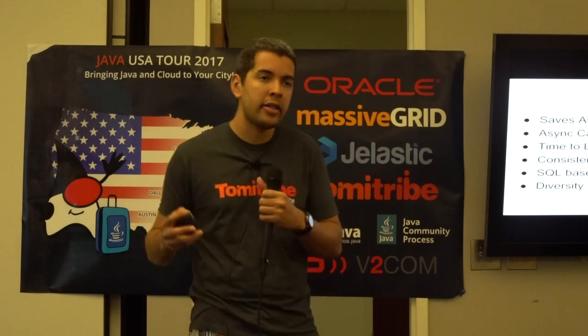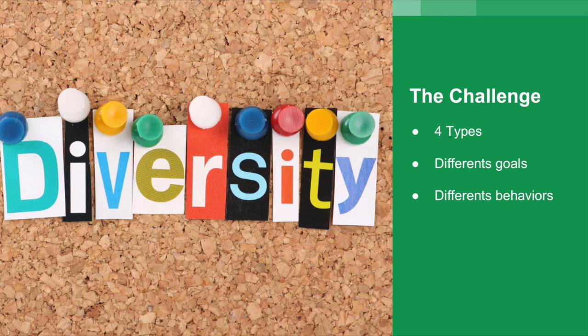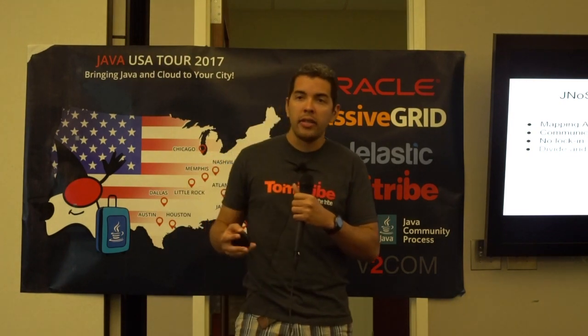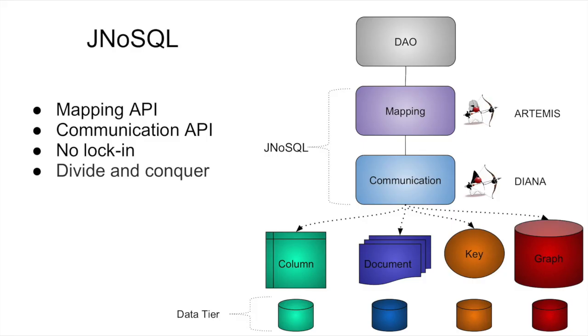That's totally different from SQL technology. So the first challenge with NoSQL technology is diversity — because the diversity really matters. We have different types, different goals, different behaviors, different proposals, different ways to communicate with NoSQL databases — P2P, Master-Slave, and more. So to try to solve that, we created the JNoSQL proposal.